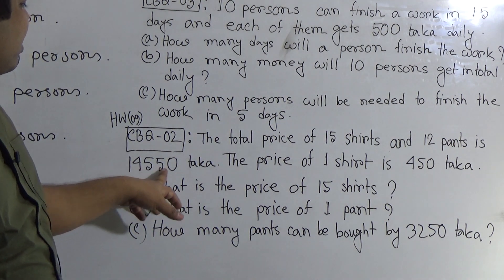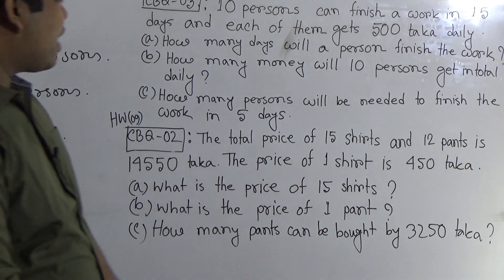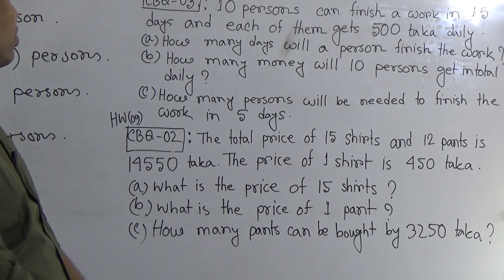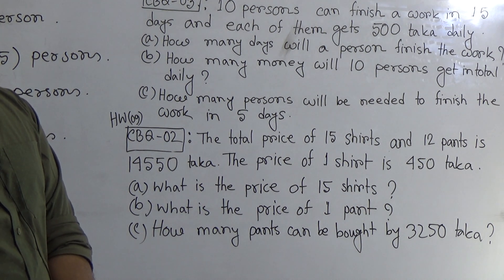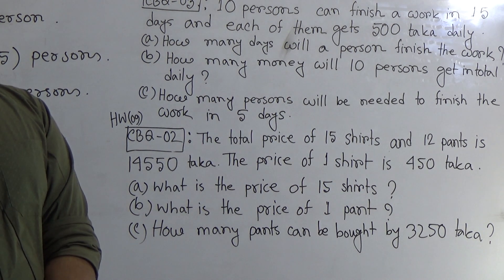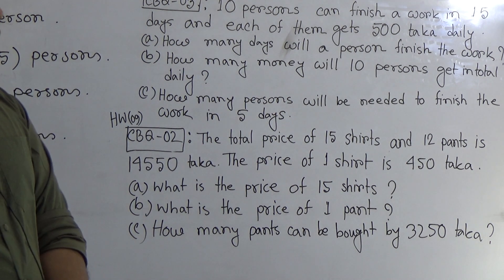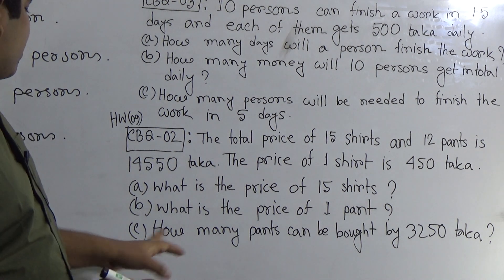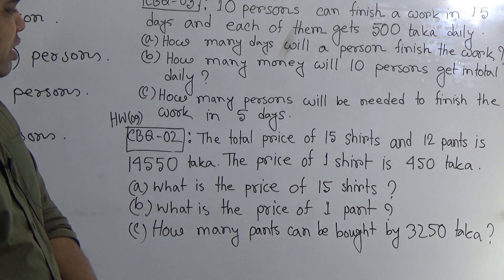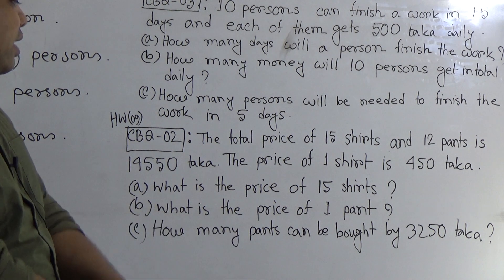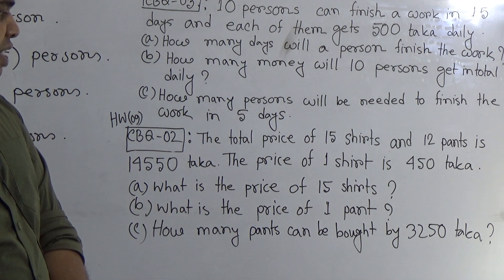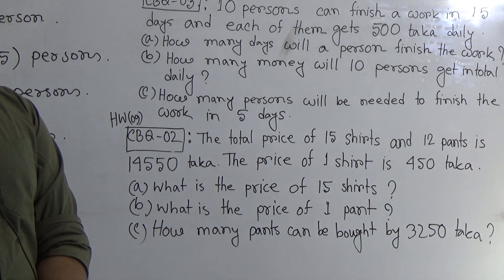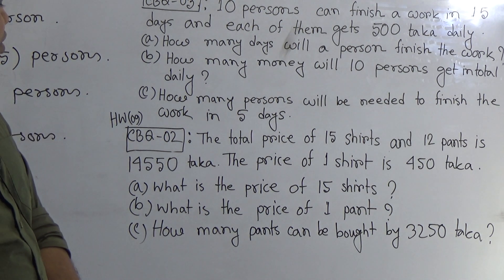The total price of 15 shirts and 12 pants is 14,550 taka. From a, we find the price of 15 shirts. Subtracting the price of 15 shirts from 14,550 gives the price of 12 pants. Dividing by 12 gives the price of one pant — that is question b. For question c, divide 3250 taka by the price of one pant to get the number of pants that can be bought.